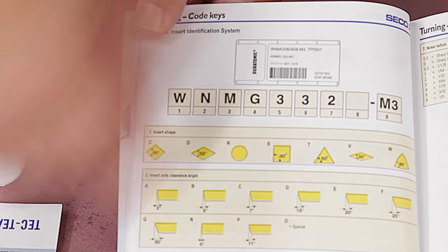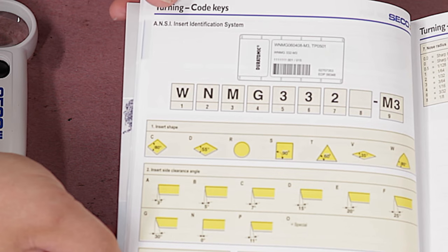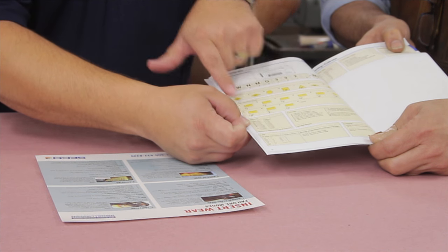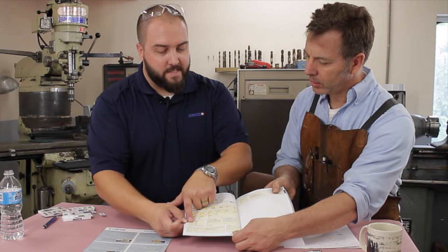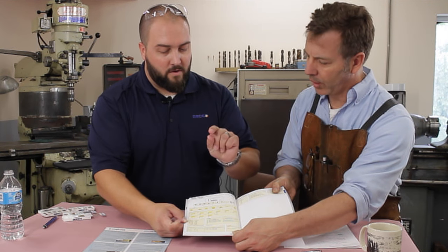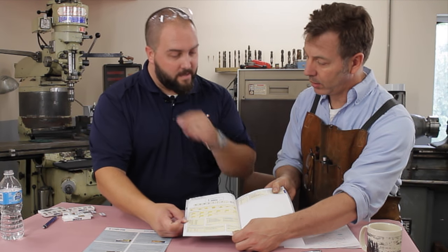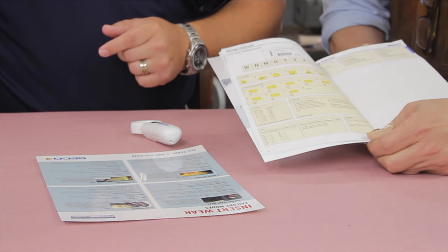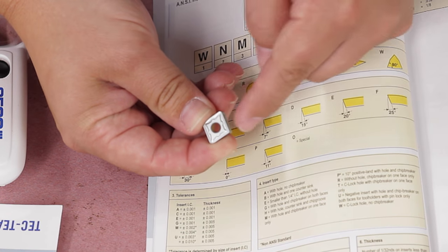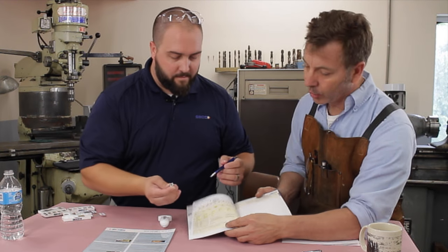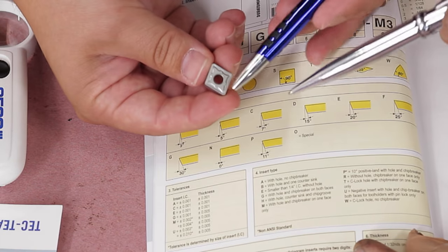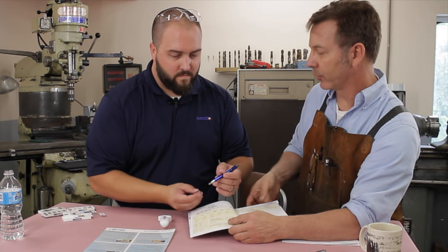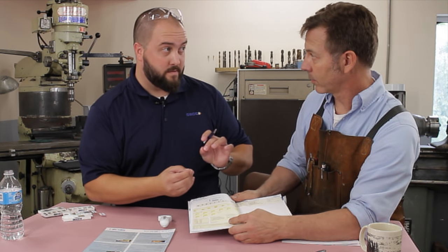So number one, that's actually what your shape is, the shape of your insert. You come over here, it's a trigon insert, a W insert. If it was a CNMG, it would be this style, the 80 degree diamond. D is a 55 degree diamond. R is round. S is 90 degree. T is a 60 degree.